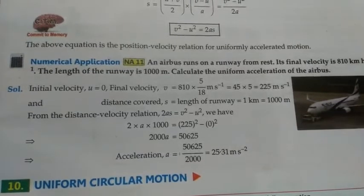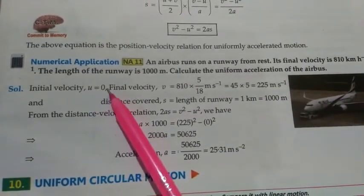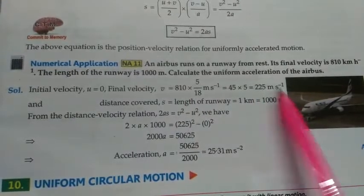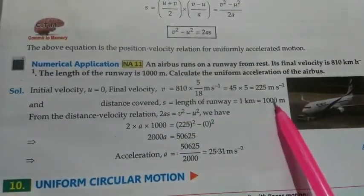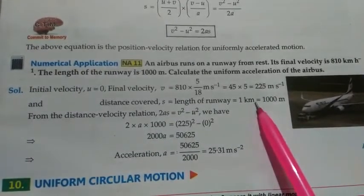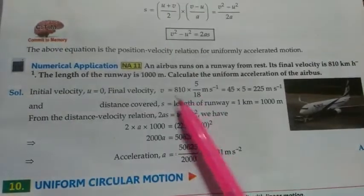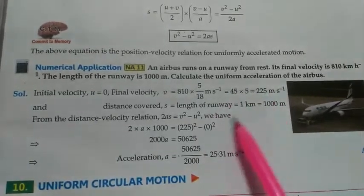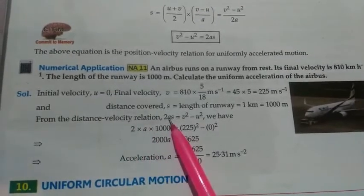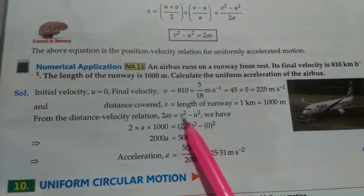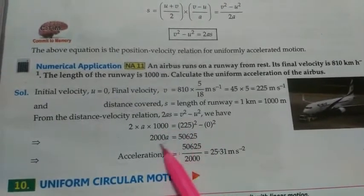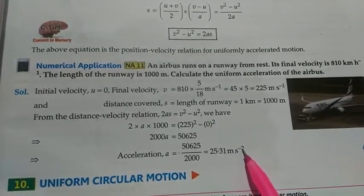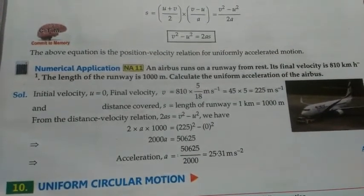Initial velocity is 0; final velocity is 810 km/h, which we convert to 225 m/s. Distance is 1000 m. We always convert all physical quantities to SI units before solving. Applying the third equation 2as = v² − u², and putting in all values, we solve to get a = 25.31 m/s². You can pause the video to note down this solution.